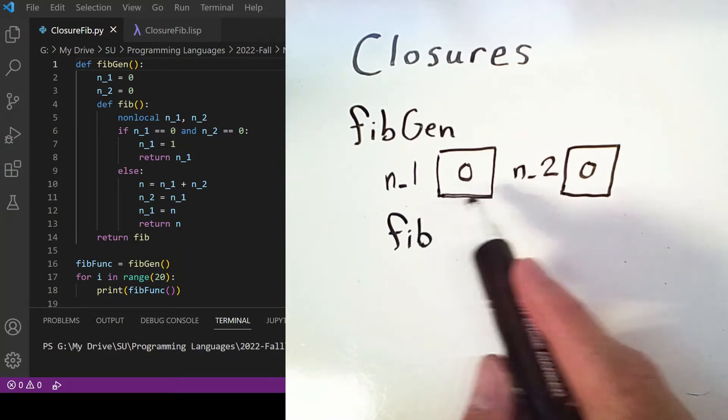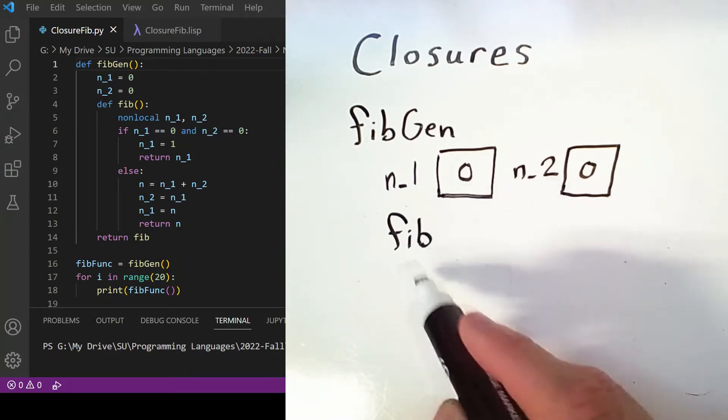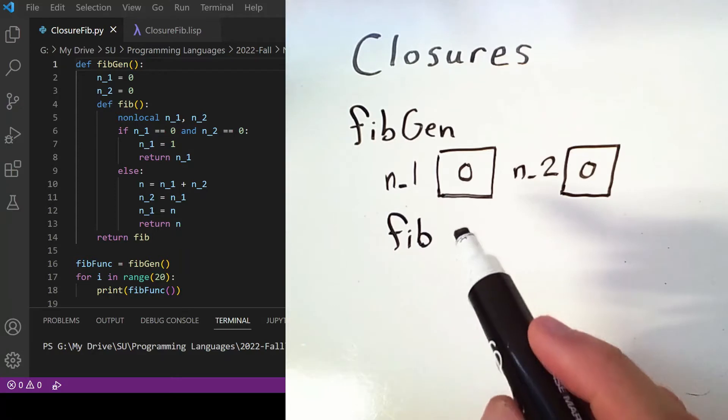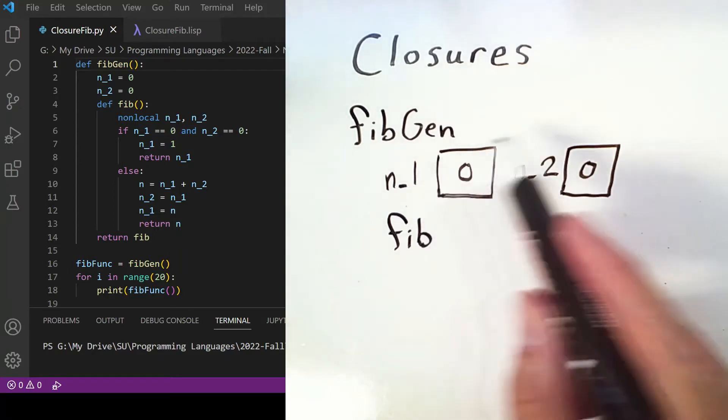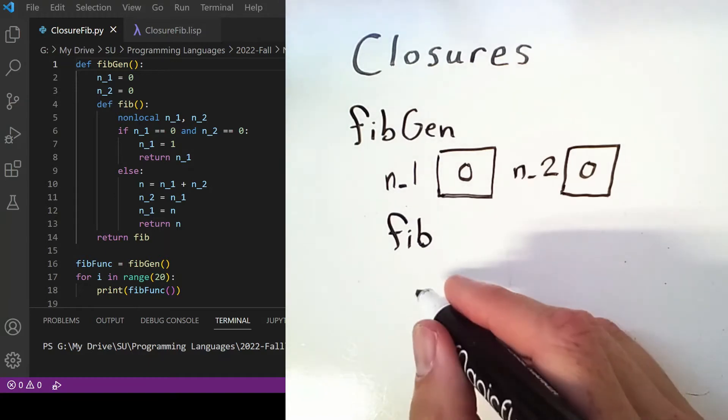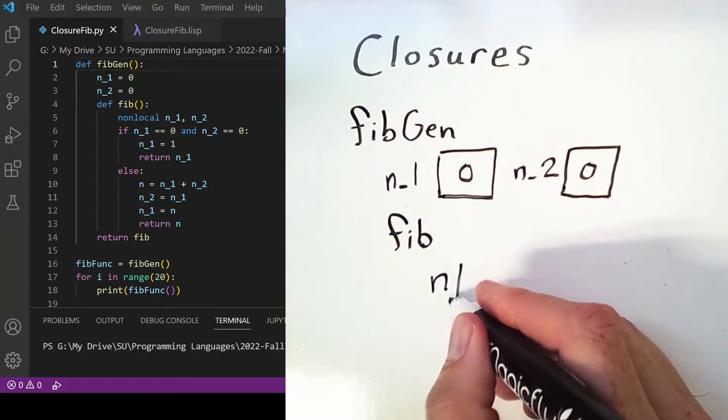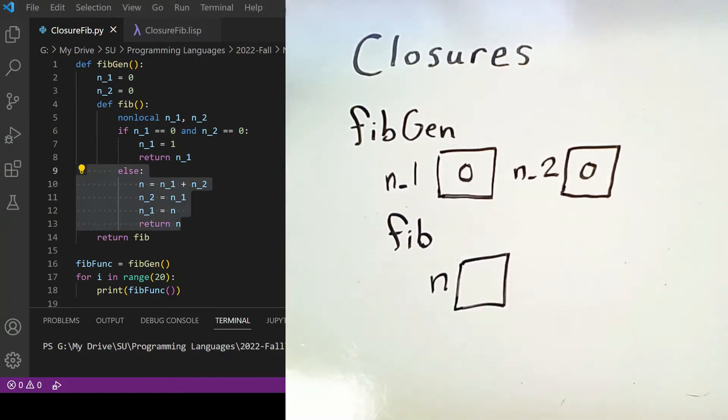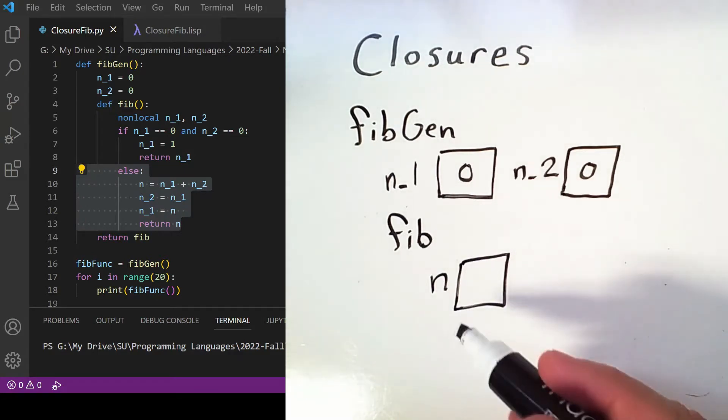So when n1 or n2 are referenced inside of fib, the variable being modified is the one inside of fibgen. Fib also defines a new variable n that is local; however, this only happens in the else case.